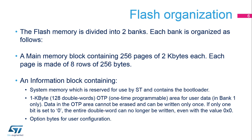When selected, the device boots in system memory to execute the bootloader. The second part is a 1 kilobyte one-time programmable area. This area is located in bank 1 only. The OTP area cannot be erased and can be written to only once. If one bit is at 0, the entire double word can no longer be written, even with the value 0.